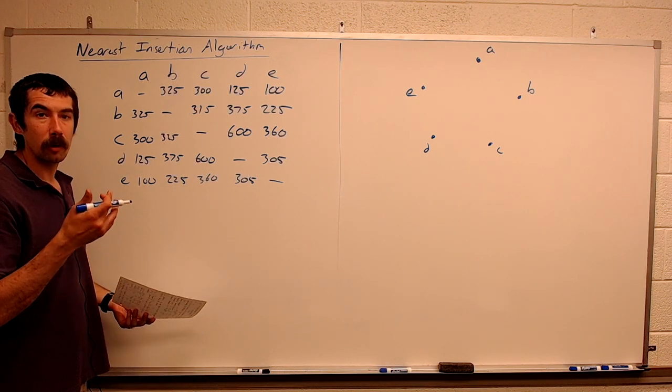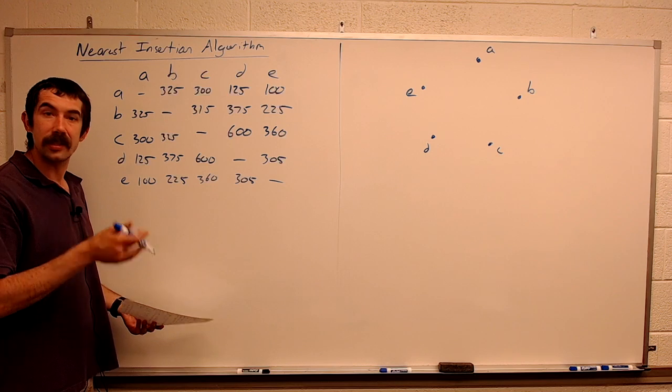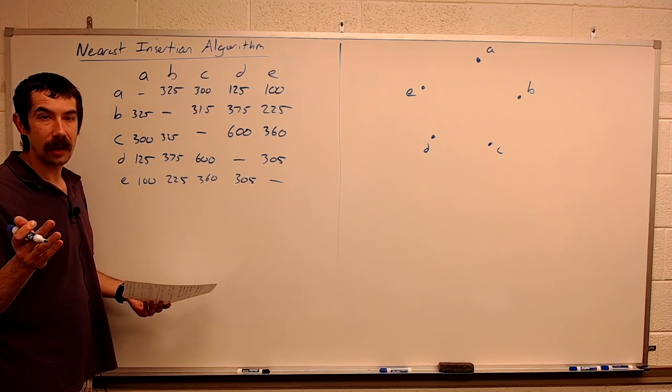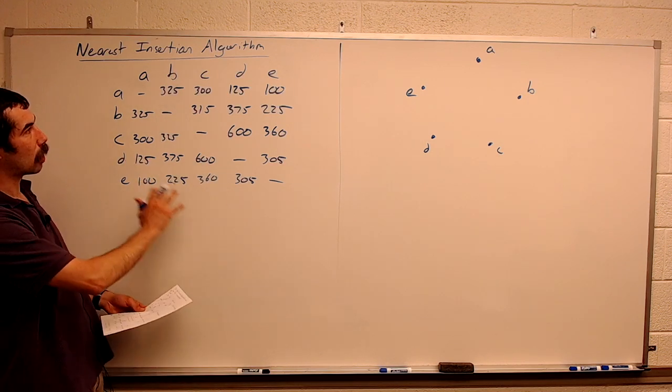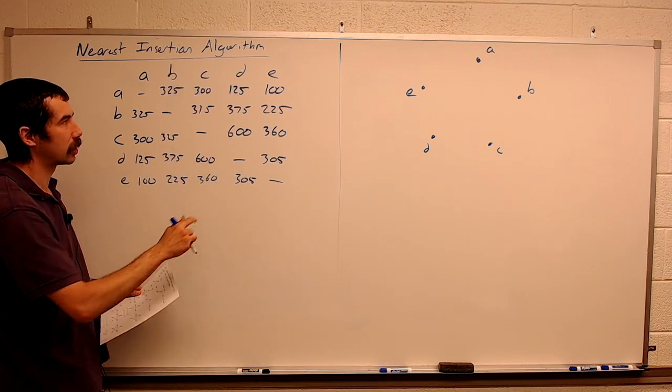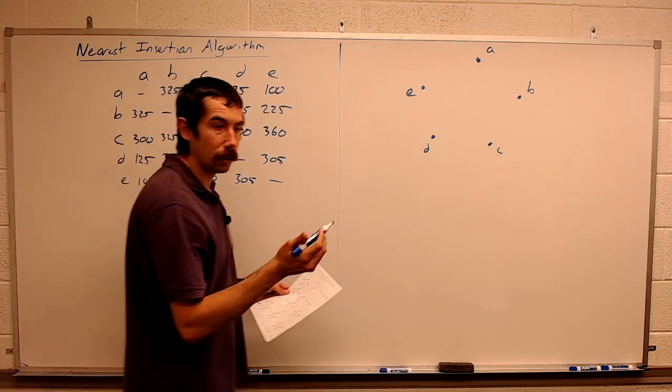The first step of the nearest insertion algorithm is to find the shortest edge. We look through our table and we find the shortest edge. It's AE, so we're going to include that.